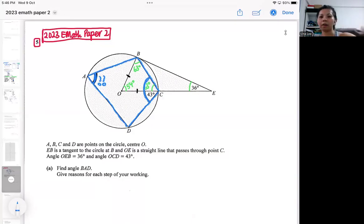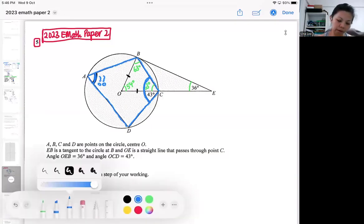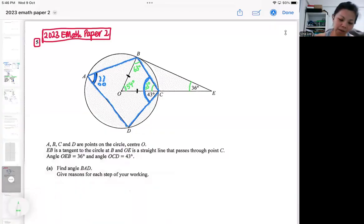So if you look back, I make use of a right angle triangle to find 54 first. After that, I can find the base angle of isosceles triangle, and then I apply the opposite angles in a cyclic quadrilateral. So all these properties have to be quoted clearly to earn your marks for this part.